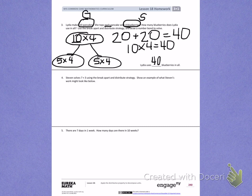Number 4. Stephen solves 7 times 3 using the break apart and distribute strategy. Show an example of what Stephen's work might look like below.